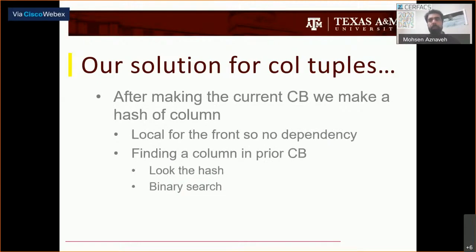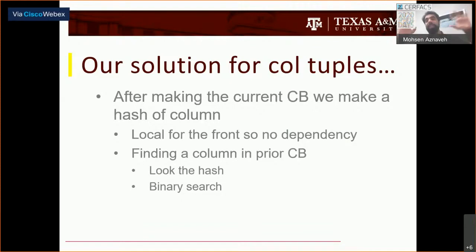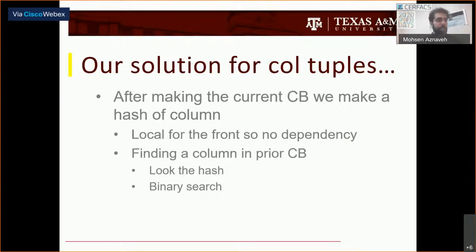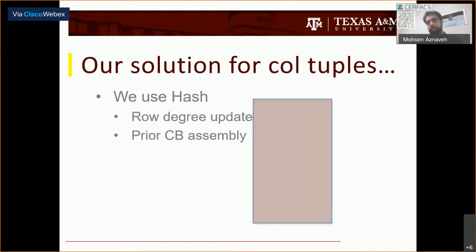After making the current contribution block, we may need to search for partial or full assembly — we need to find the columns. We can do binary search on them since they are sorted. Additionally, I made a hash of the current contribution block and first search in the hash. If I couldn't find it in the hash, I do a binary search in logarithmic time. With that, we totally eliminated the column tuples from our new algorithm that is inherited from UMFPACK. That hash can be really helpful.